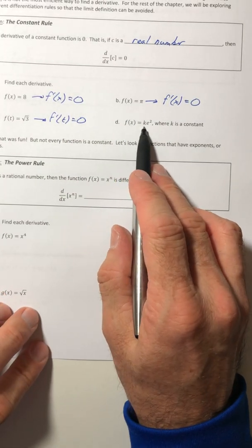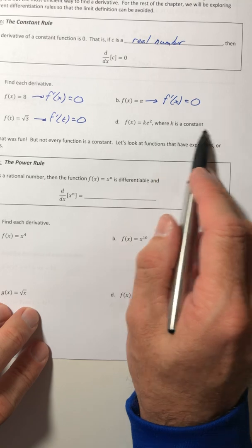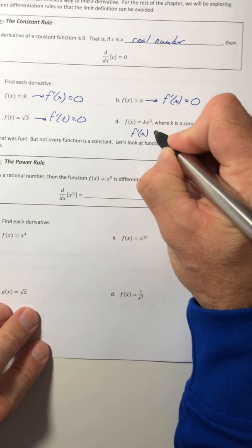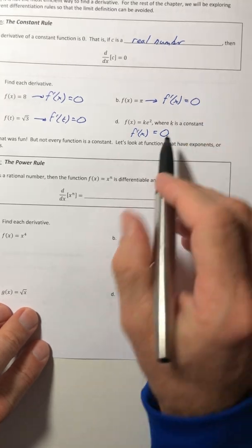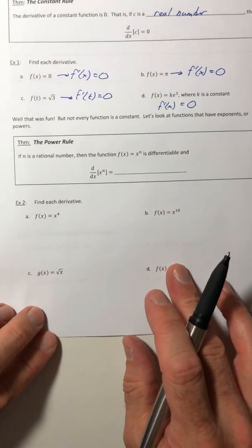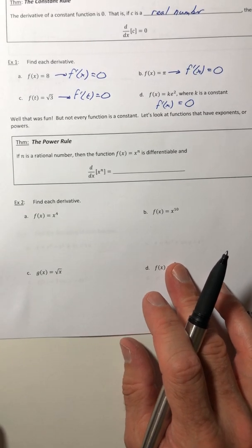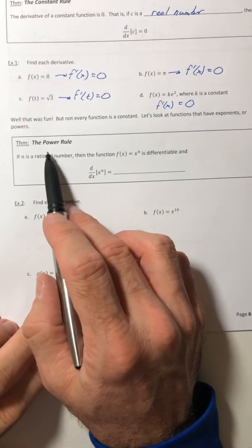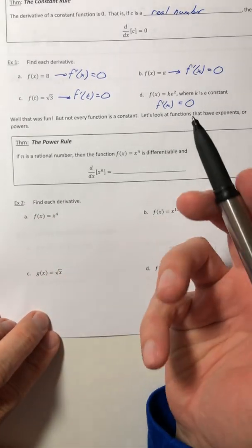And d, f of x equals k e squared, where k is a constant. Well, that means its derivative is zero, because k and e squared are both constants. All right, that was a whole lot of fun, wasn't it? Didn't even have to use that limit definition once. Okay, so now let's look at what happens when you've got powers involved.